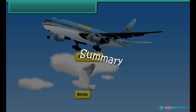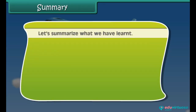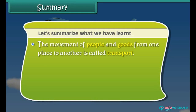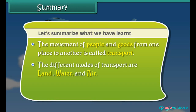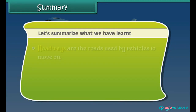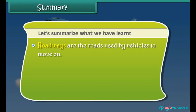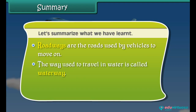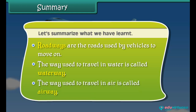Summary. Now friends, let's summarize what we have learned. The movement of people and goods from one place to another is called transport. The different modes of transport are land, water and air. Railways are the road tracks over which trains run with the help of wheels. Roadways are the roads used by vehicles to move on. The way used to travel in water is called a waterway, and the way used to travel in air is called an airway.